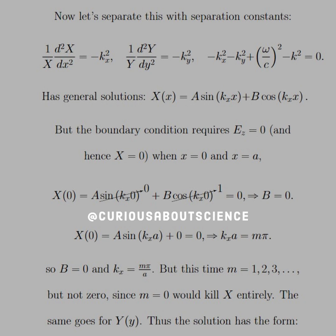So we plug them all in. We see that B goes to zero, and the only way that works is if k_x a equals some integer multiple of pi. This time m equals one, two, three, but not zero, since m equals zero would kill X entirely. We cannot have that.